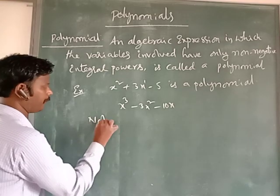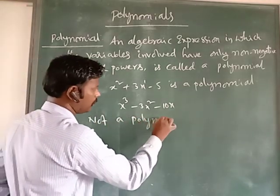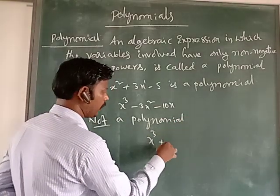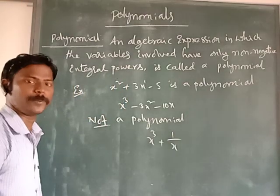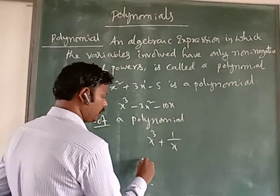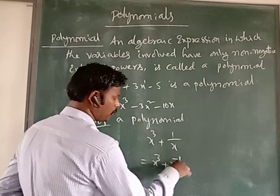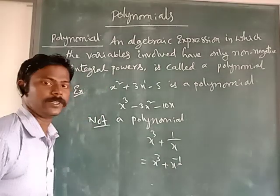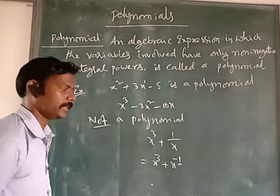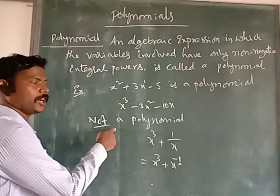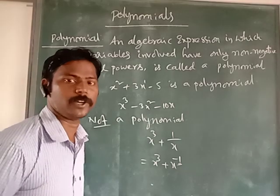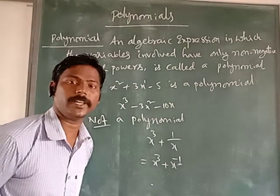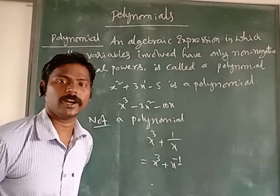Now, what is NOT a polynomial? See, x³ + 1/x is not a polynomial. Why? Because if you rewrite this, it becomes x³ + x⁻¹. So x has power minus 1, which is a negative integer. When a negative integer power is present, this algebraic expression is not called a polynomial. An algebraic expression containing only positive integral powers of the variables is called a polynomial.